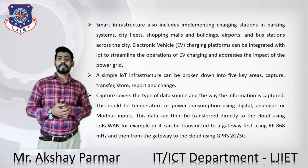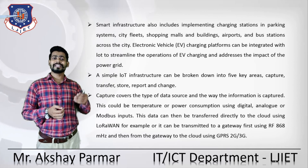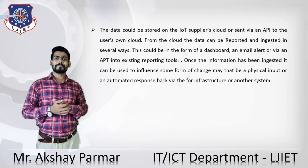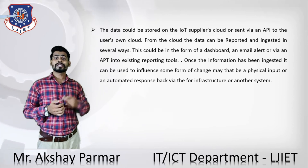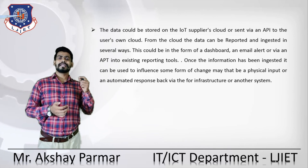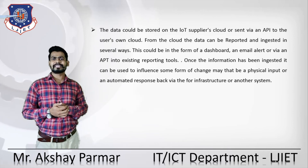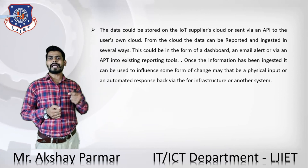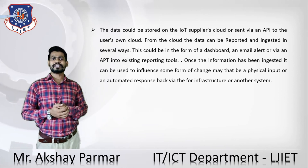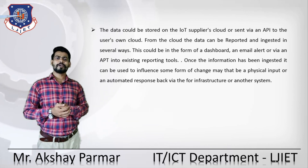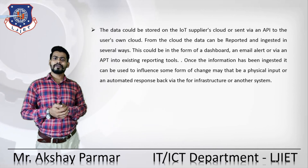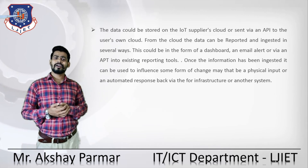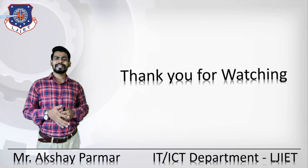A simple IoT infrastructure can be broken down into five key areas: Capture, Transfer, Store, Report, and Change. Capture covers the type of data source and how information is captured — such as temperature or power consumption using digital, analog, or Modbus input. Data can be stored on a cloud or sent via API to the user's own cloud. From the cloud, data can be reported through dashboards, email alerts, or via API into existing reporting tools. Once ingested, the information can trigger physical input or an automated response back to the infrastructure.